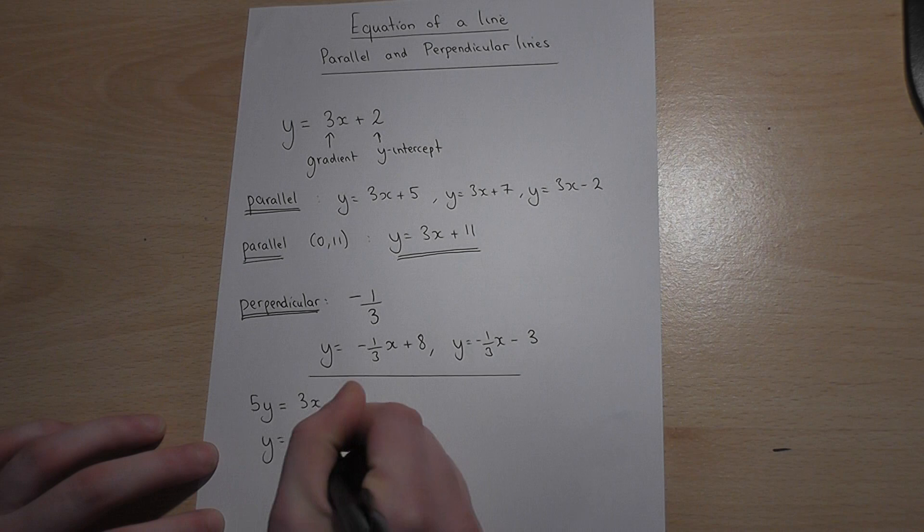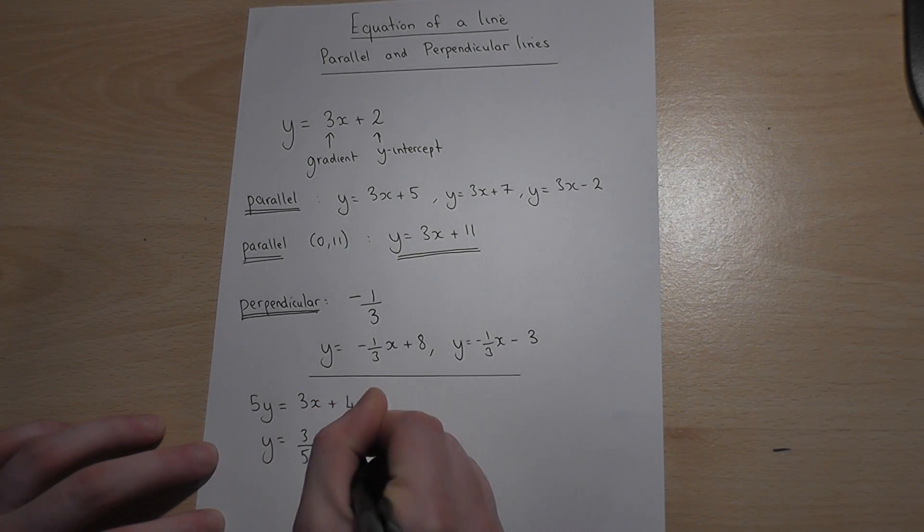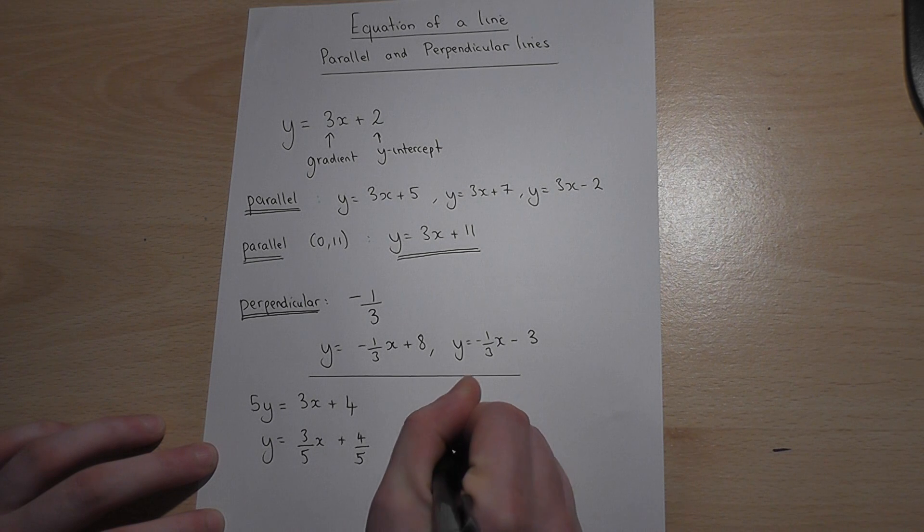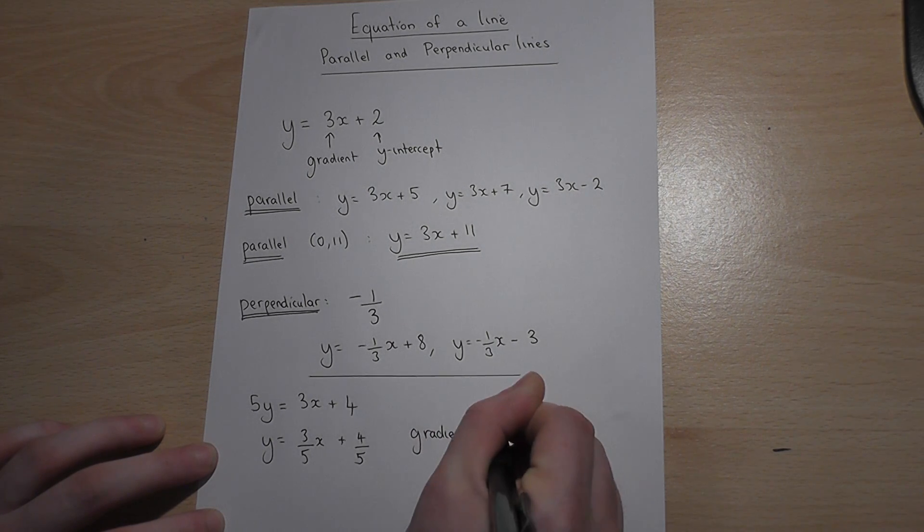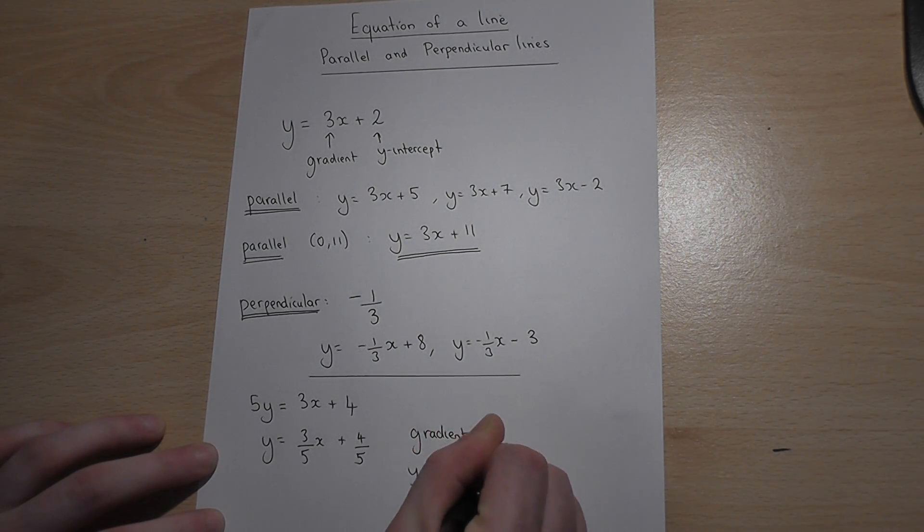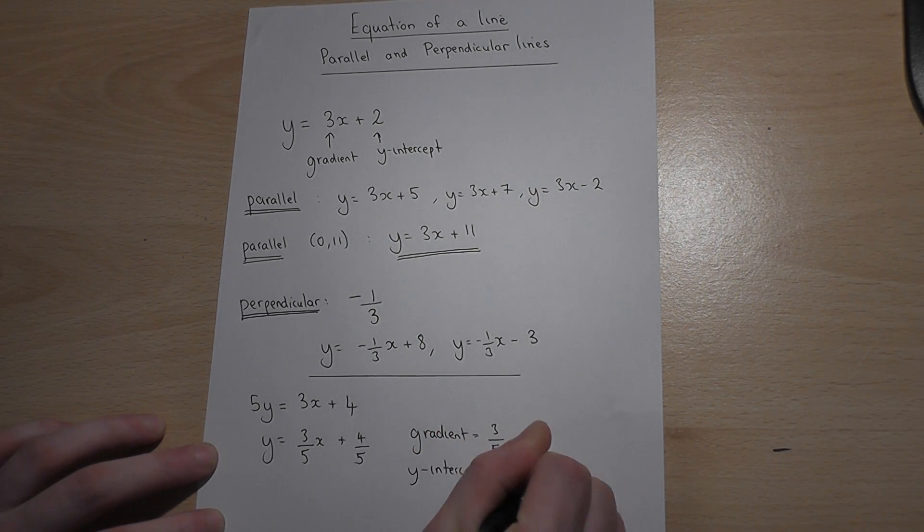So y equals 3 over 5x plus 4 over 5, which means that the gradient of this line is 3 over 5 and the y-intercept is 4 over 5.